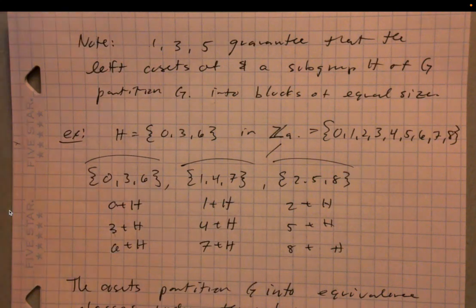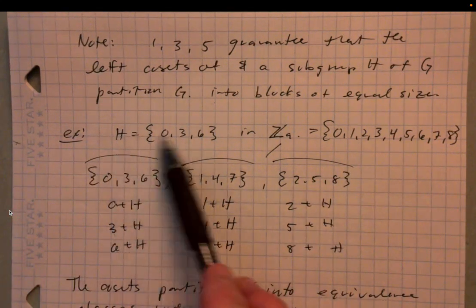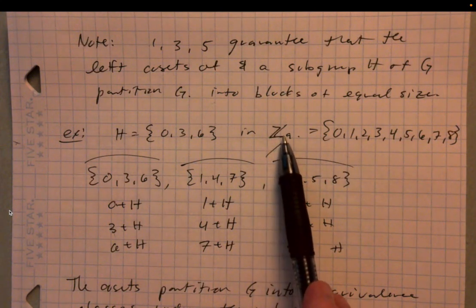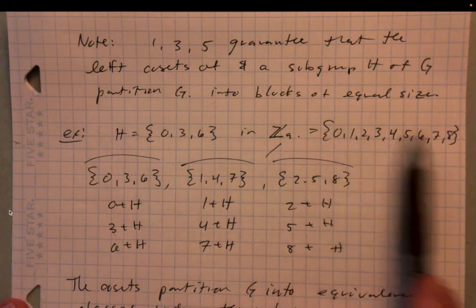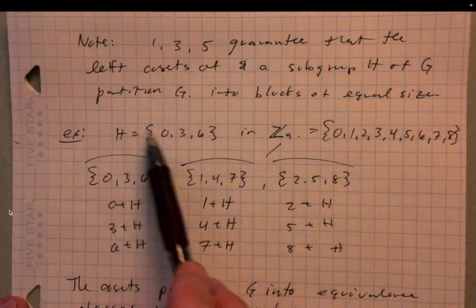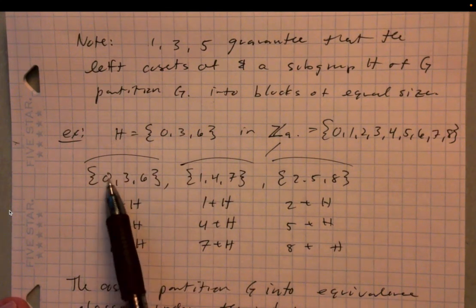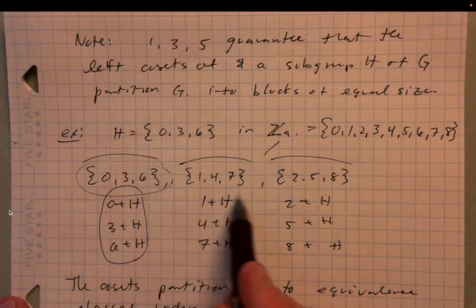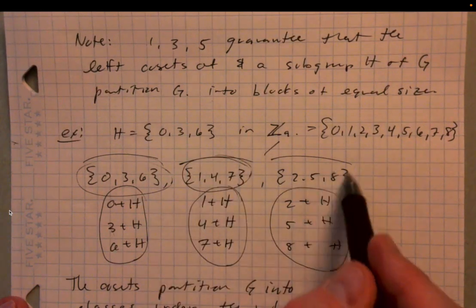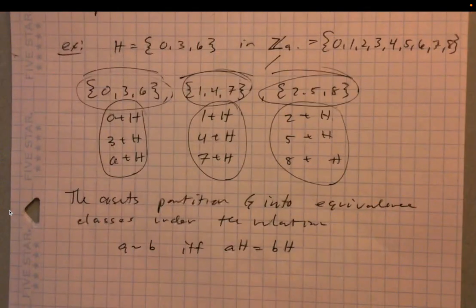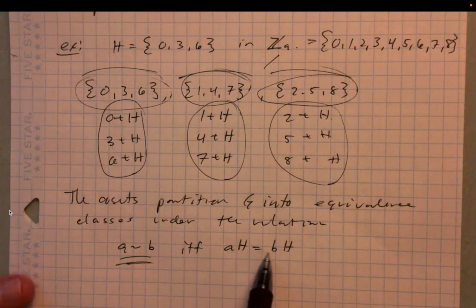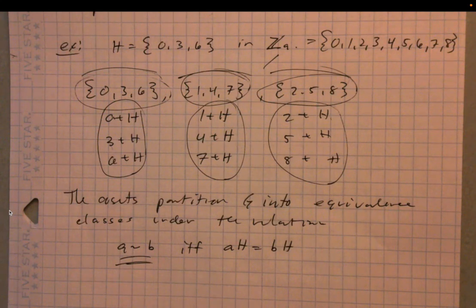We had this example from previously in the lecture where we started with a subgroup H = {0, 3, 6} in the group Z₉ under ordinary addition modulo 9. This would be the entirety of the group, 0 through 8. The left cosets of H = {0,3,6} partition Z₉ into {0,3,6}, {1,4,7}, and {2,5,8}. We said that the relation is that a is equivalent to b if and only if aH equals bH, i.e. the left cosets generated by a and b are the same.